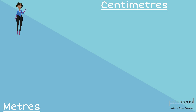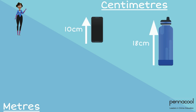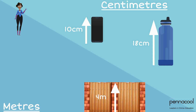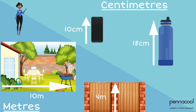Centimeters is a smaller unit of length. For example, the length of a phone can be measured in centimeters, or the height of a bottle of water. Meters, however, is a larger unit. We measure taller and longer items in meters — for example, the height of a wall or the length of one's yard.